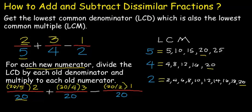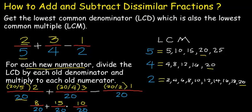20 divided by 5 is 4, multiplied by 2 is 8. 20 divided by 4 is 5, multiplied by 3 is 15. 20 divided by 2 is 10, multiplied by 1 is 10. Our denominator is still 20. So this becomes 8 over 20 plus 15 over 20 minus 10 over 20.